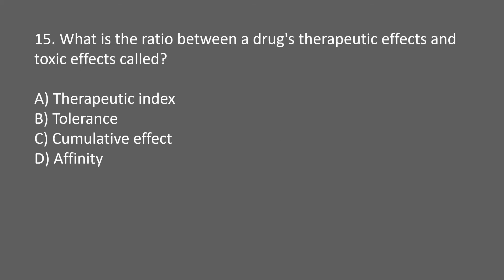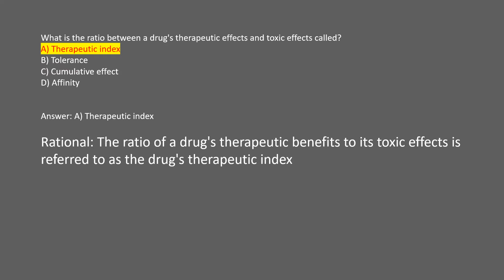What is the ratio between a drug's therapeutic effects and toxic effects called? A. Therapeutic index. B. Tolerance. C. Cumulative effect. D. Affinity. Answer: A. Therapeutic index. Rational: the ratio of a drug's therapeutic benefits to its toxic effects is referred to as the drug's therapeutic index.